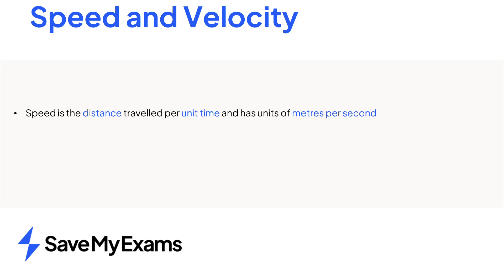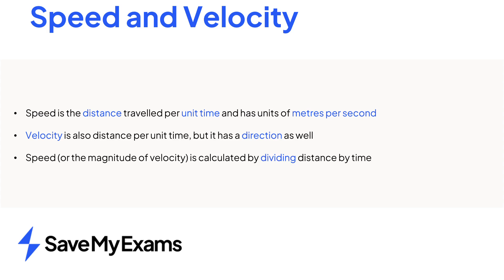Speed is how far something travels in a given period of time and is measured in meters per second. Velocity is the same as speed with an additional direction component. And to calculate speed or the magnitude of velocity, just divide distance by time.